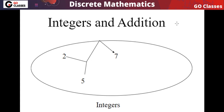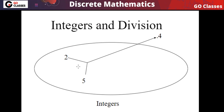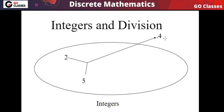For all elements, whatever two integers you take, their addition will also be another integer. But for integers under division, if you take 2 and 5, their division will not be an integer. If you apply division, the result will go outside the set — so this is not closed. This is the idea of closure property.